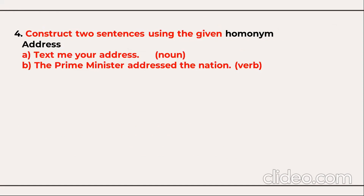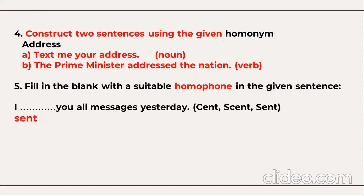Next you have homonym. You need to create two sentences using the word 'address' as a homonym. For example: 'Text me your address' — here address is a noun. 'The Prime Minister addressed the nation' — here address is used as a verb.